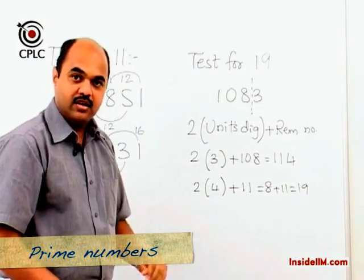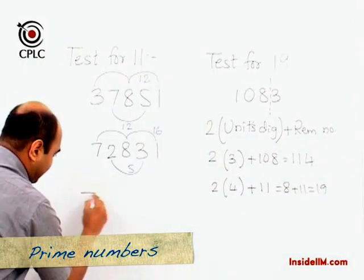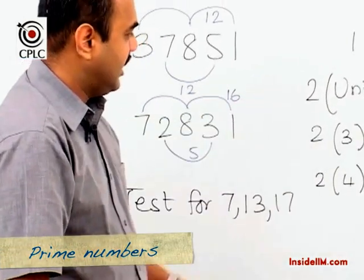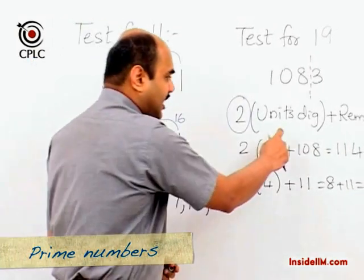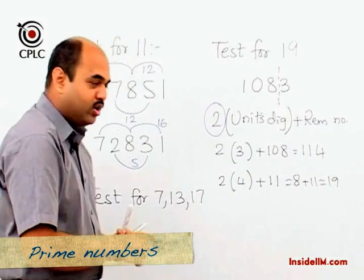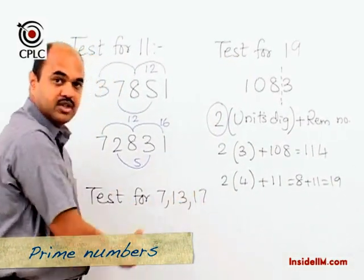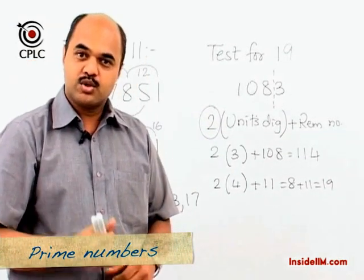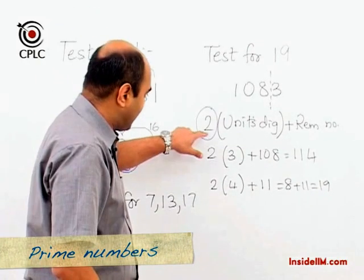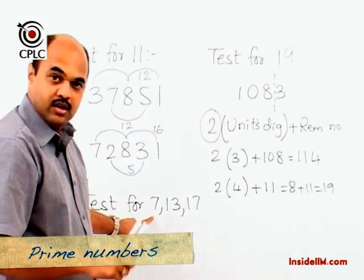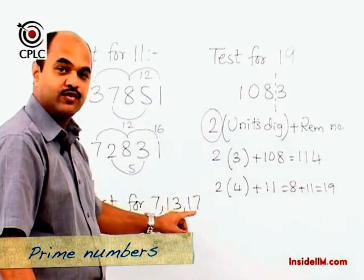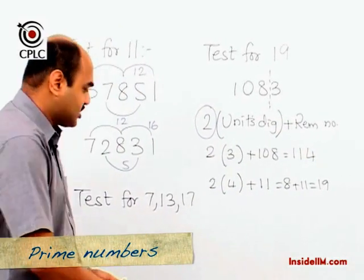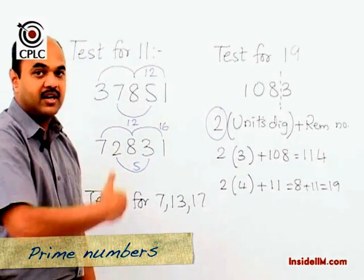We can use this logic of 19 to identify tests for 7, 13, and 17. The logic is similar: it would be a certain value multiplied by the units digit plus the remaining number. The only difference from 19 is that the multiplying value will not be 2, but some other value. I would request you to try out a few examples and arrive at what this value would be for 7, for 13, and for 17.